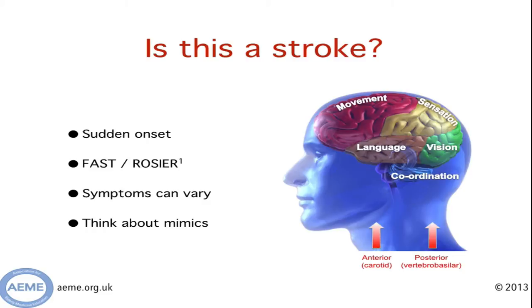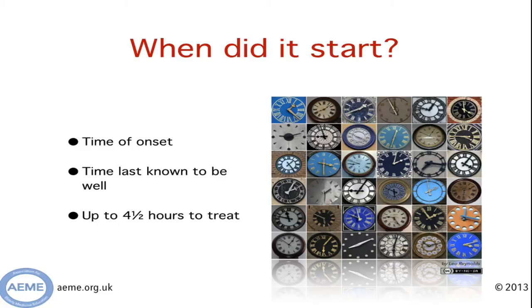One of the most important things to determine is when the symptoms started. After the onset of symptoms, we have four and a half hours to give somebody thrombolysis treatment. But as we said, time is brain, and within that four and a half hour window, the sooner you give the treatment, the better chance it has of working. If it's difficult to determine when the symptoms started, you have to backdate them to the last time the person was definitely known to be well.